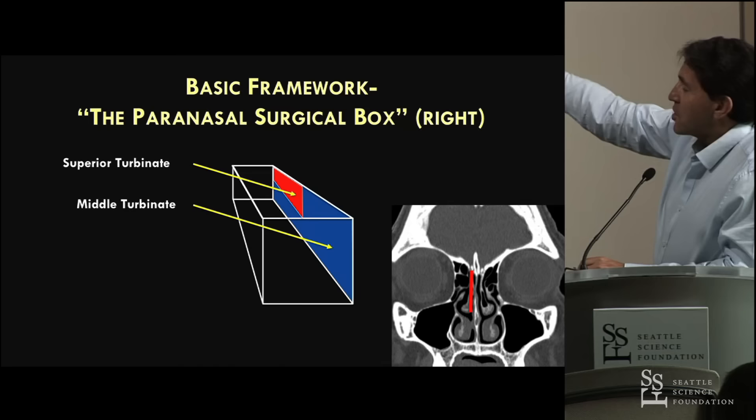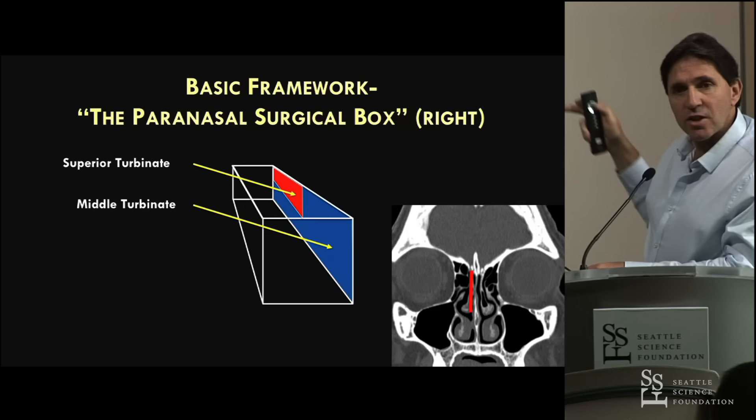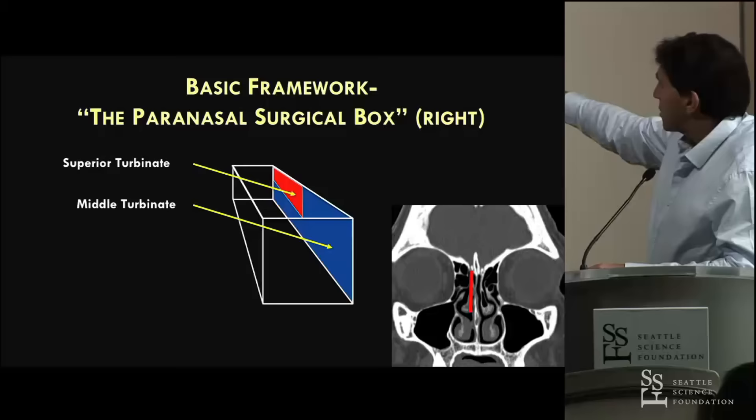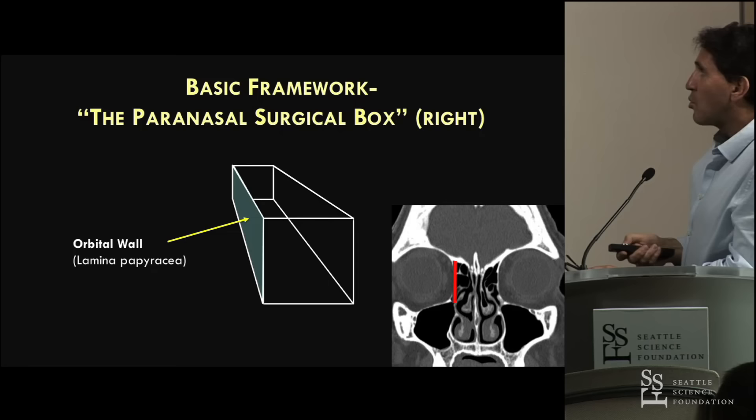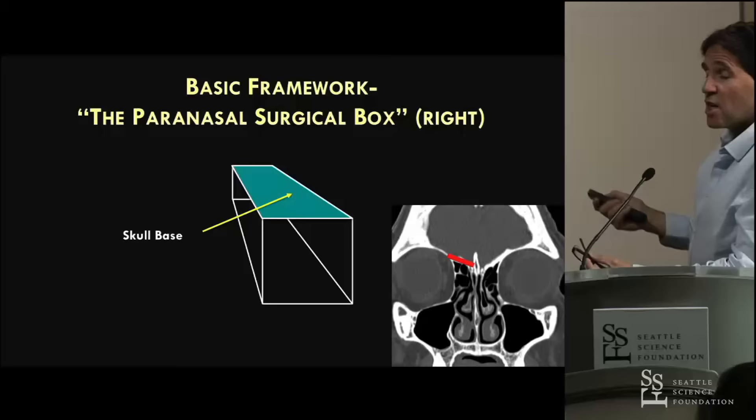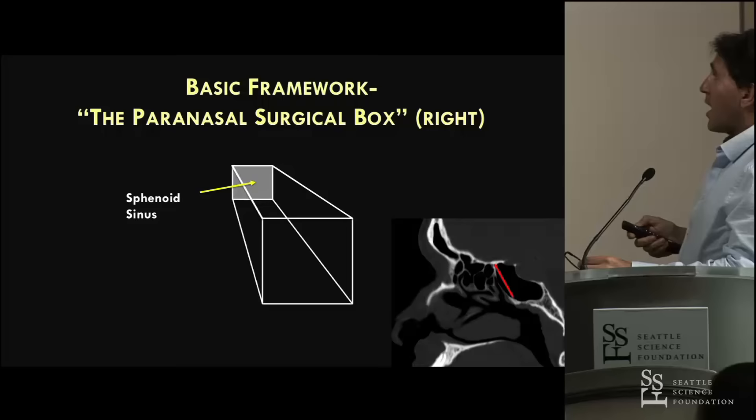We've got the superior turbinate and the middle turbinate, which as Brent pointed out are really in the same sagittal plane - it's really important that you understand that concept. The superior and middle turbinate lie there on the coronal CT scan. The medial boundary is the orbital wall of the lamina papyracea. Superiorly you've got the skull base, and posteriorly you've got the anterior face of the sphenoid sinus. That's our sphenoid box.